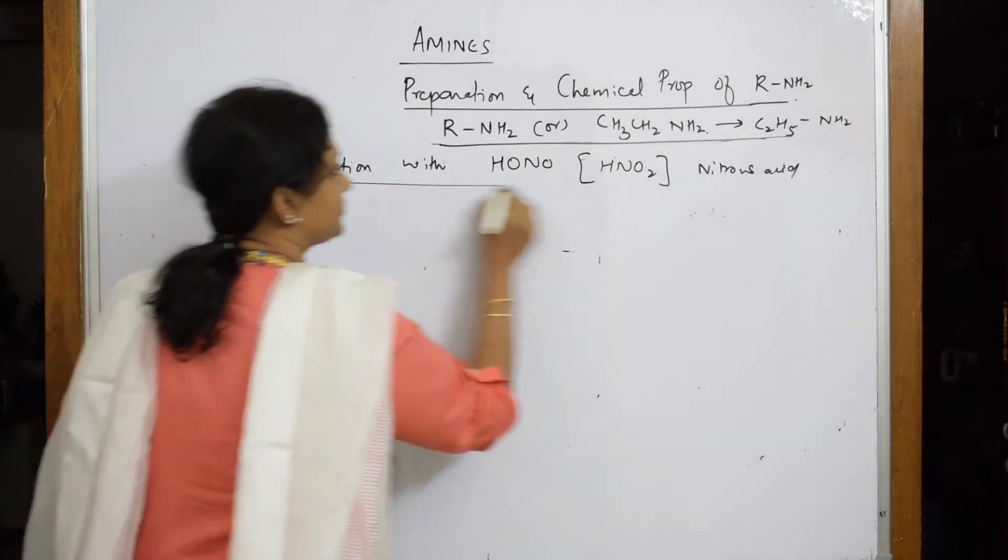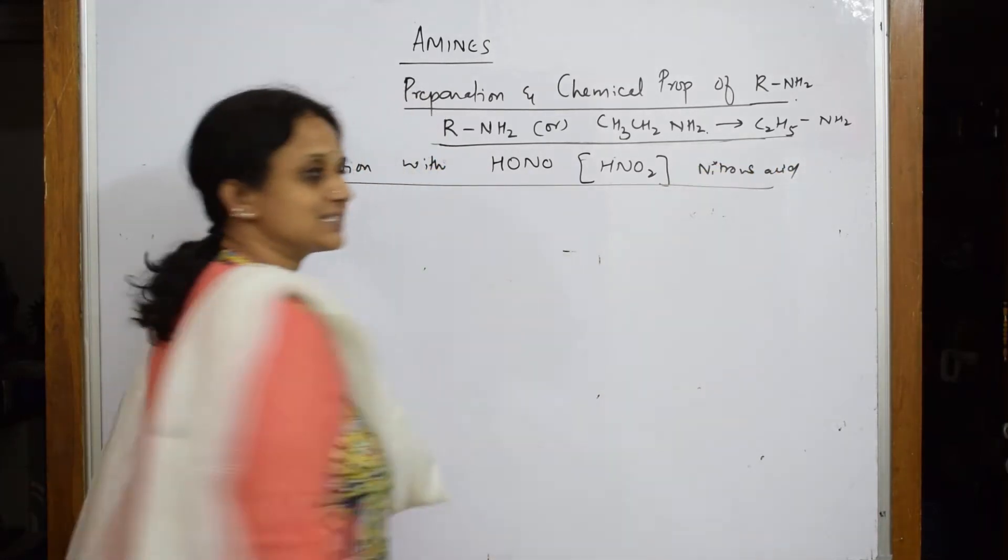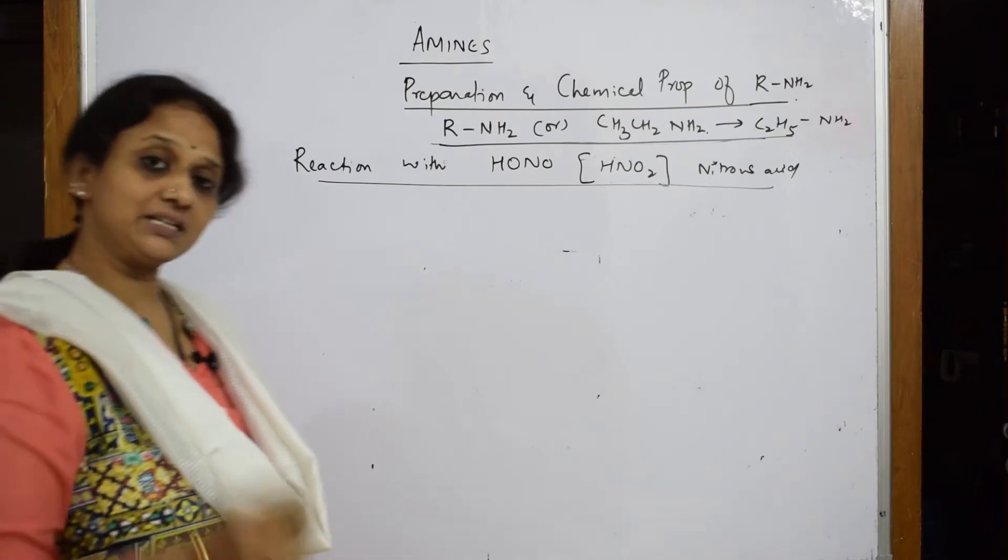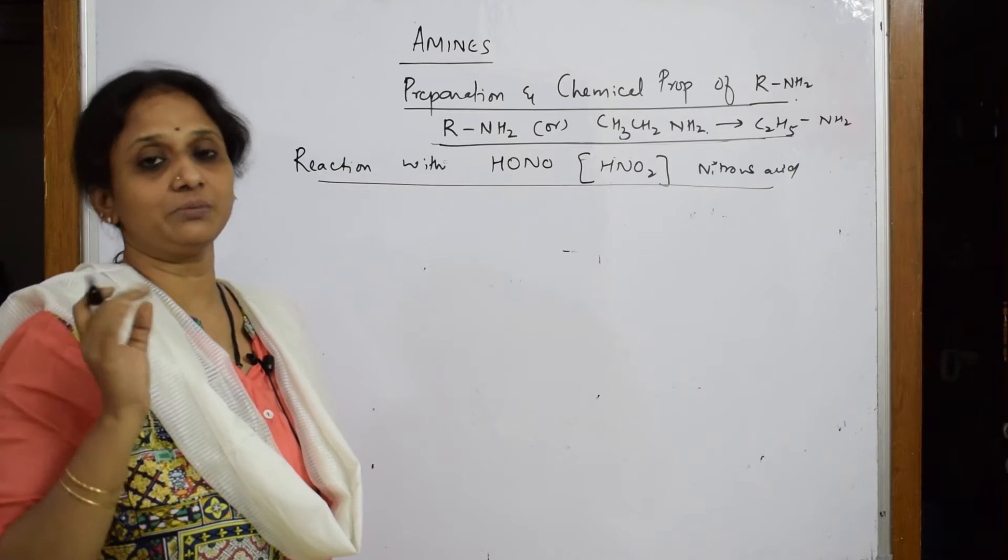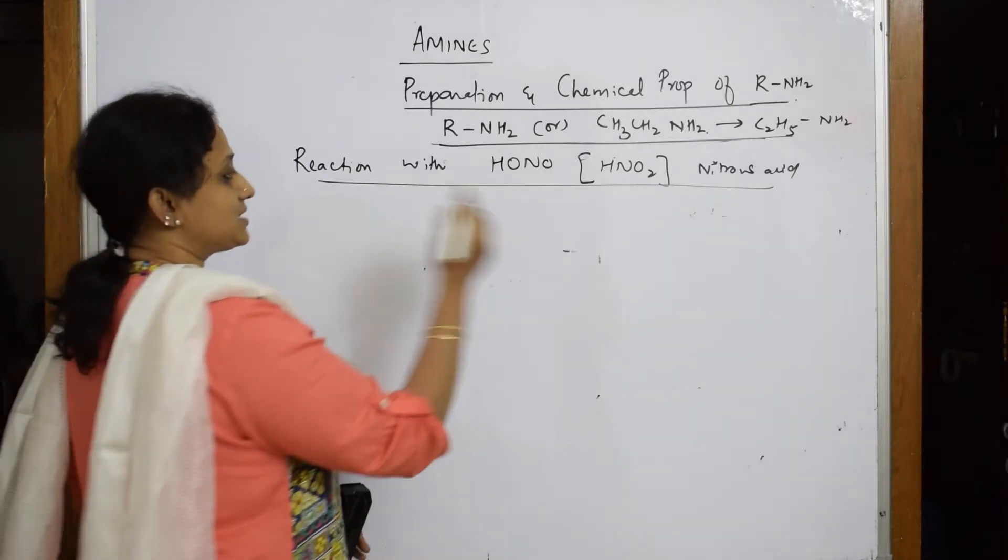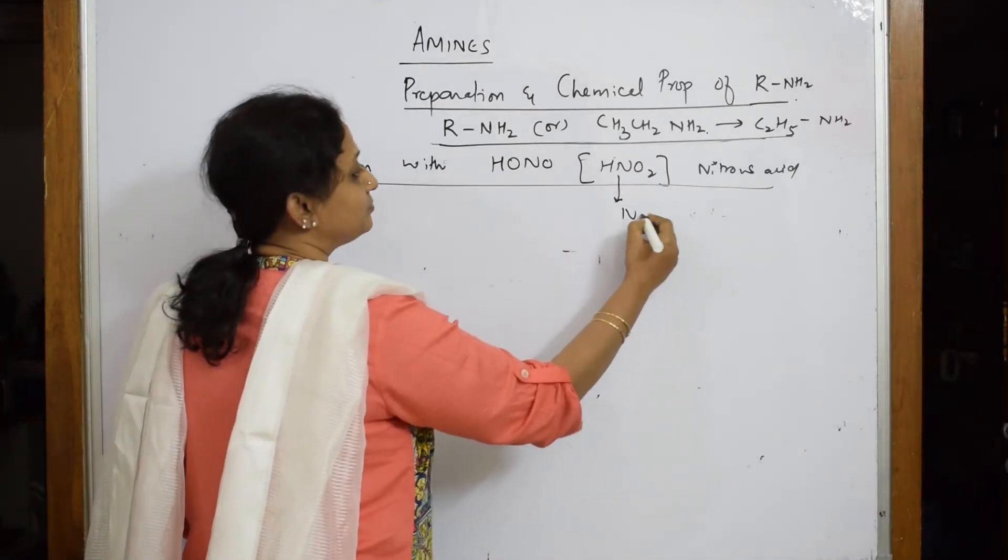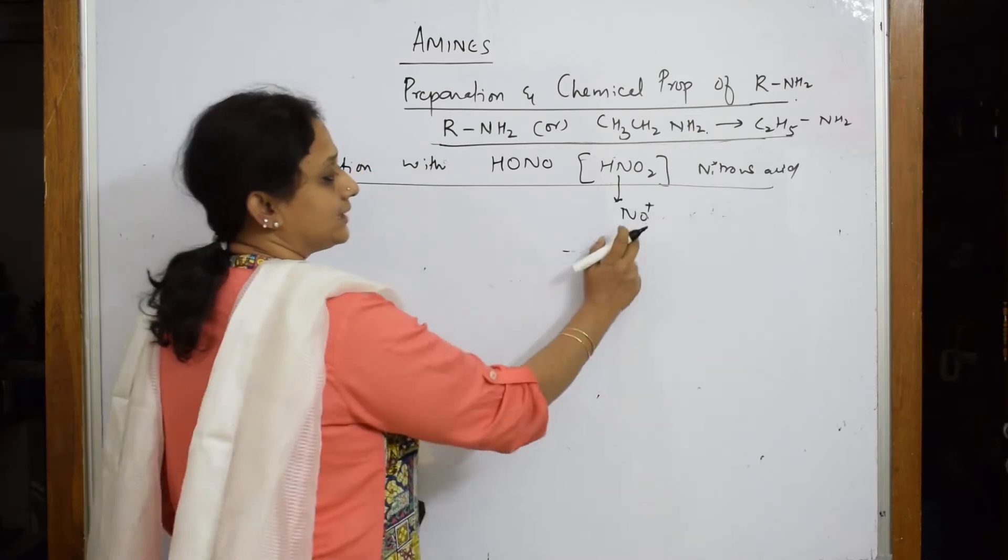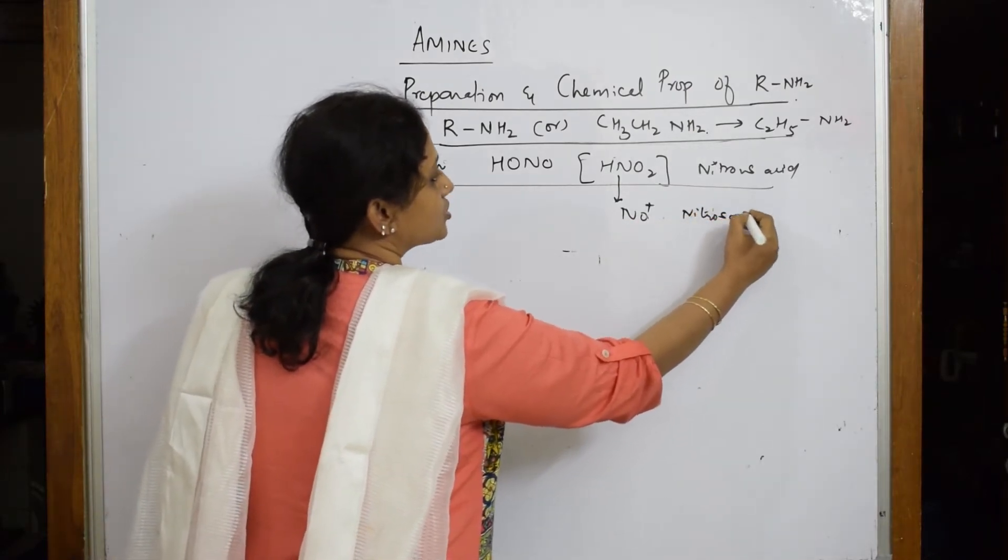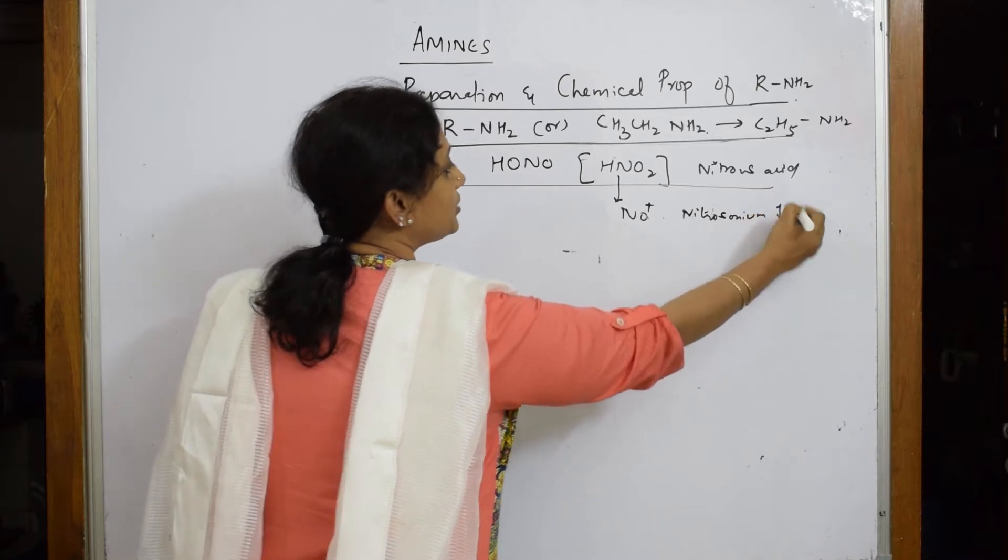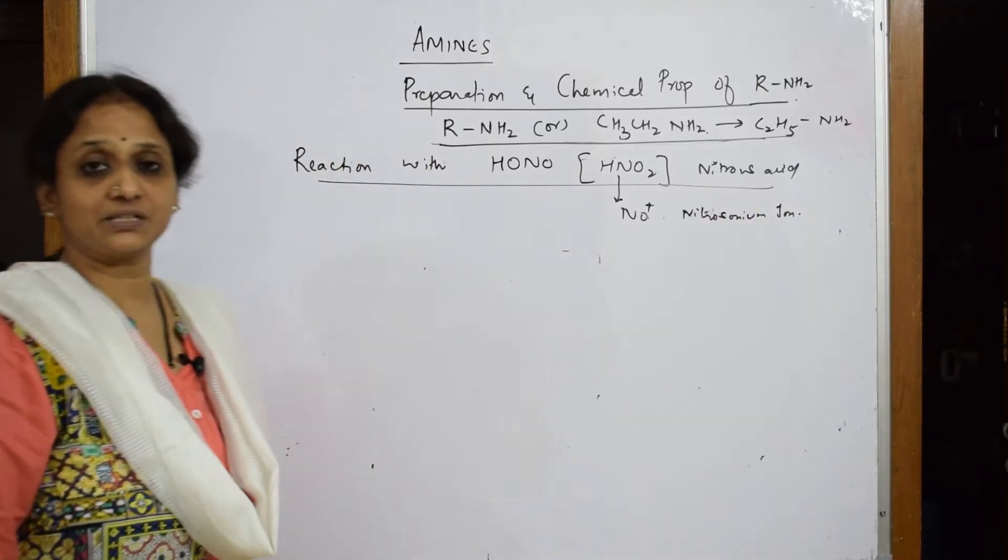Nitrous acid has a particular important cation, that is your nitrosonium. That is very important. What does it have? This has nitrosonium ion. Because of this nitrosonium ion, we are going to get a different product in the particular reaction.